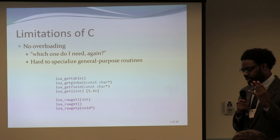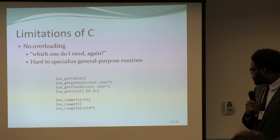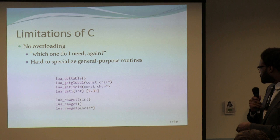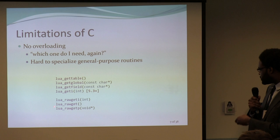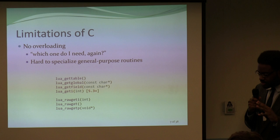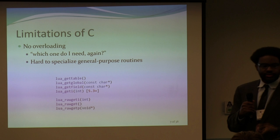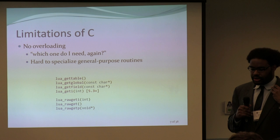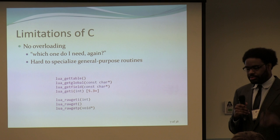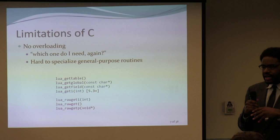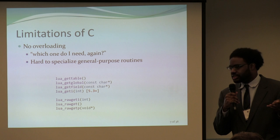Also, one limitation — not just of the Lua C API but of C in general — is that there's no overloading. There are a bunch of different functions to get things out of a table or globals: some take strings, some take integers, some are raw versions, and one is only available in Lua 5.3 or above. Developers can get tripped up quickly about what functions to call, and often fall back on the most general thing like 'lua_gettable' even when that's not the most efficient approach.